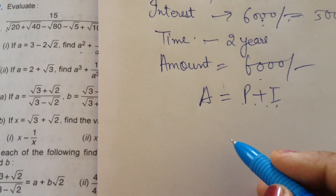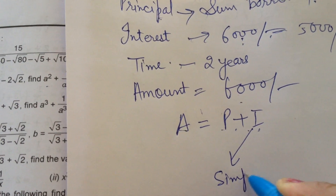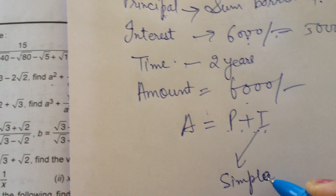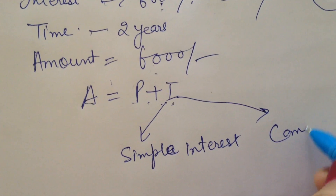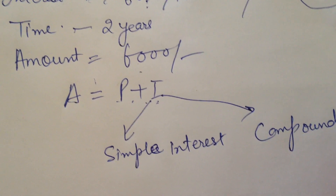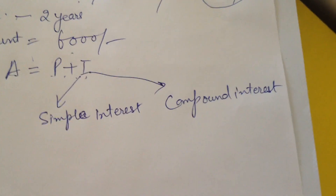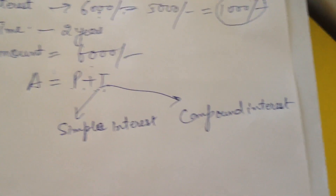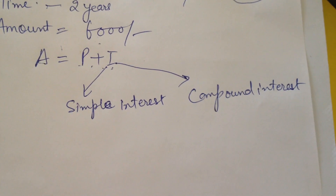Now interest is of two types. One is simple interest and another one is compound interest. Interest is of two types: one is simple interest, and another one is compound interest.